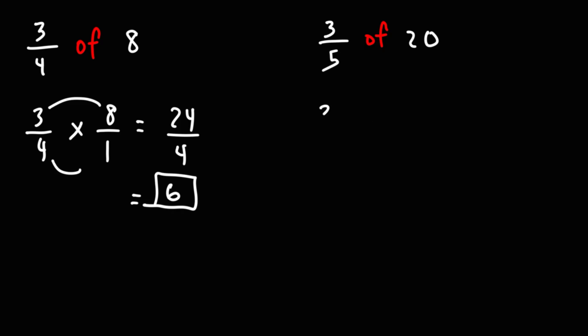For the second example we have 3 over 5 of 20. So what's 3 fifths of 20? Well that's going to be 3 over 5 times 20 over 1. 3 times 20 is 60, 5 times 1 is 5, 60 divided by 5 is 12.